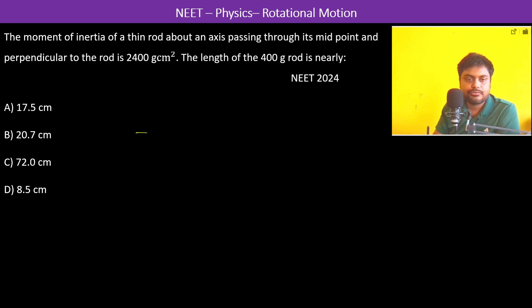The moment of inertia of a thin rod about an axis passing through its midpoint and perpendicular to the rod is 2400 gram centimeter square. So x x dash is equal to 2400 gram centimeter square.